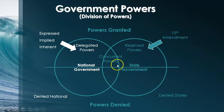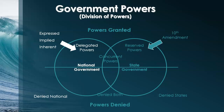Concurrent powers are the ones that both the federal and state and local governments share — such as the power to collect taxes and the power to arrest people. There are state crimes, local crimes, and federal crimes, and the ability not only to arrest people but to put them on trial. There are local courts, state courts, and federal courts, so law enforcement is a concurrent power. Finally, there are powers denied to both — your individual rights, like the right to free speech and the right to practice your religion, cannot be taken away by any government.